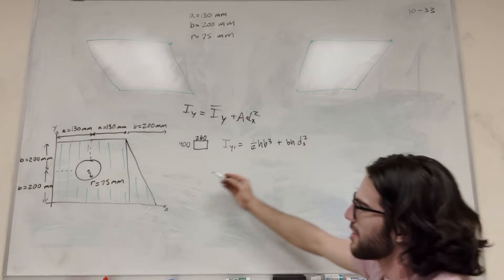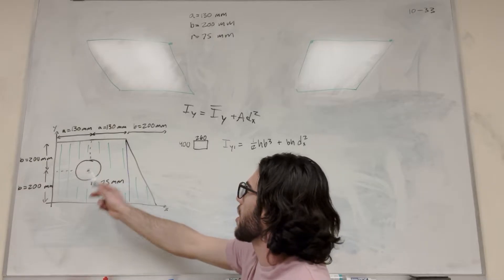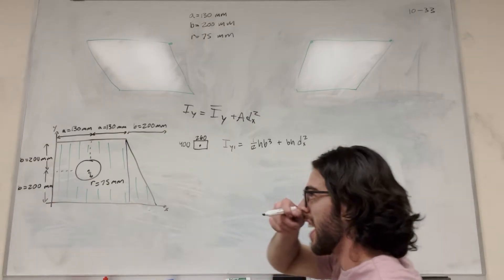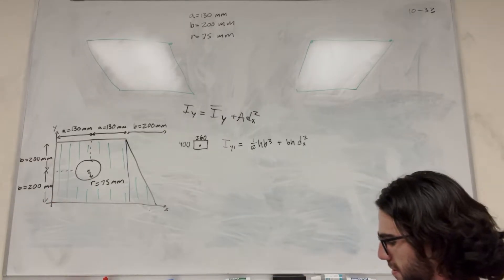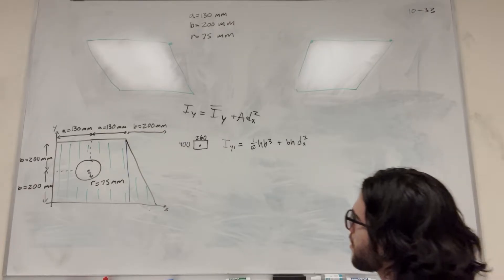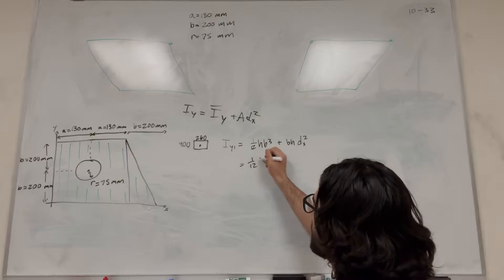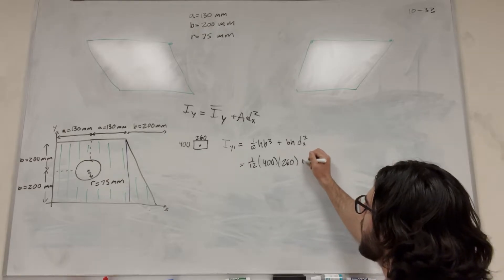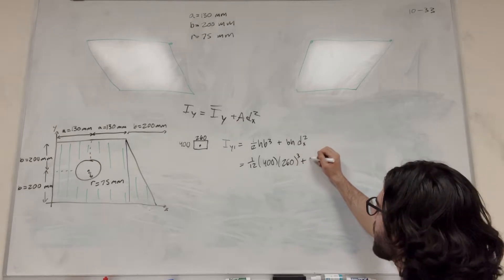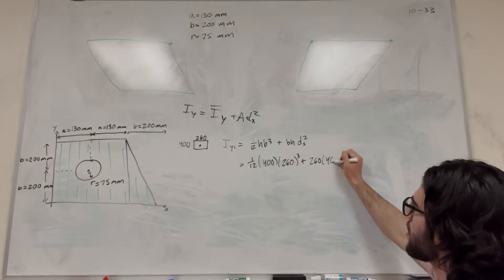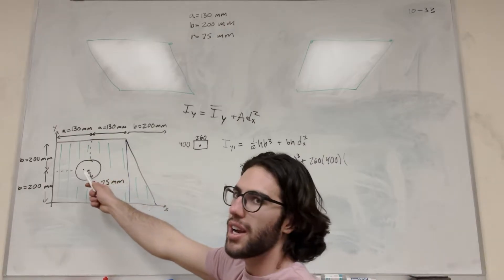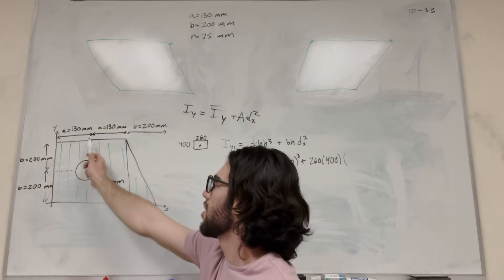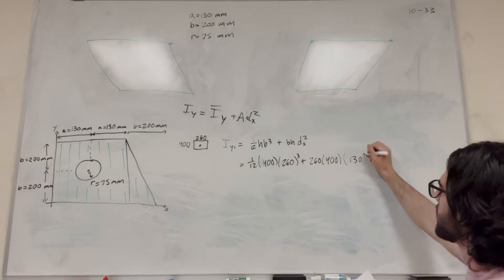This distance in the x is the distance away from the y-axis from the center of mass. We know that this rectangle has a center of mass at its center, so it's going to be how far that is from the center of mass to the y-axis. Let's go ahead and plug in our numbers. So 1 over 12, its height is 400, its base is 260, and then cube that, and we're going to add it to its base, 260 times height 400, and then distance in the x. Its center of mass is halfway across, so it's 130 millimeters across, and that's how far it is from the y-axis. So 130 squared.